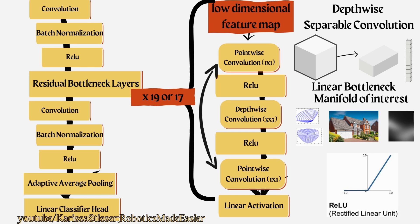A residual connection is added between the two pointwise convolutions, which are at the same dimensionality at the beginning and at the end. And that helps improve the gradient flow for backpropagation.